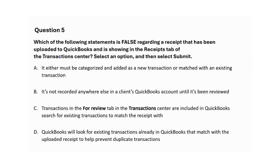Which of the following statements is false regarding a receipt that has been uploaded to QuickBooks and is showing in the Receipts tab of the transaction center? A: It either must be categorized and added as a new transaction or matched with an existing transaction. B: It's not recorded anywhere else in a client's QuickBooks account until it's been reviewed. C: Transactions in the For Review tab in the transaction center are included in QuickBooks' search for existing transactions to match the receipt with. D: QuickBooks will look for existing transactions already in QuickBooks that match with the uploaded receipt to help prevent duplicate transactions. The correct answer is C.